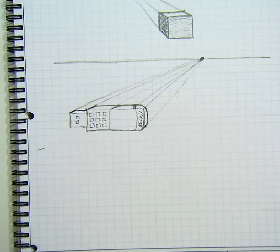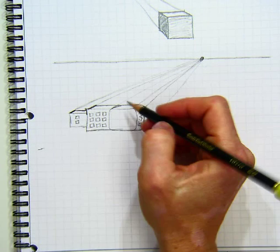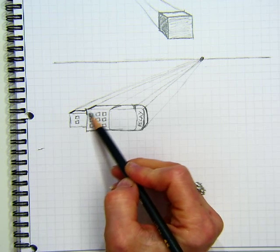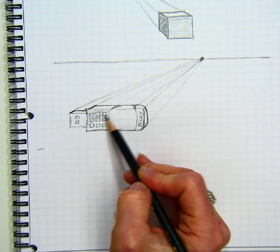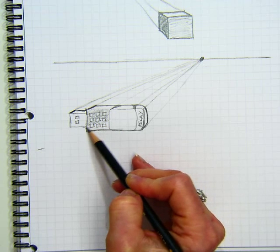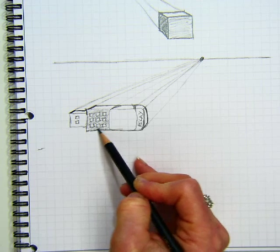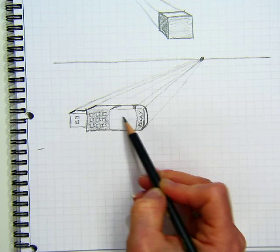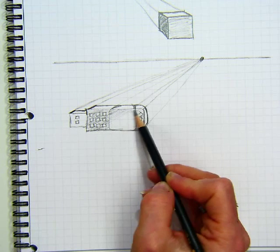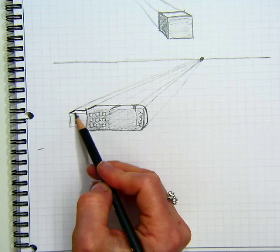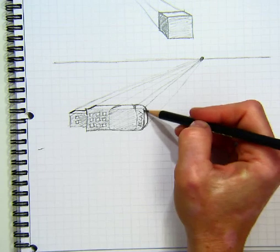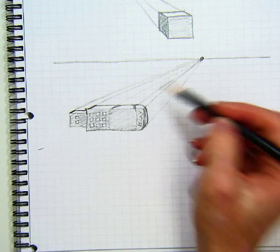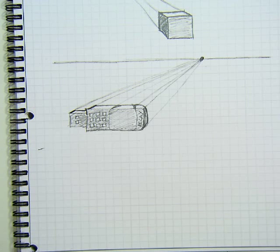And then we can do some shading. And then a little bit of shading over here. And that is my flash drive in one point perspective.